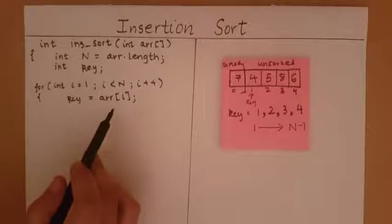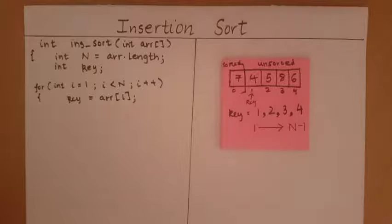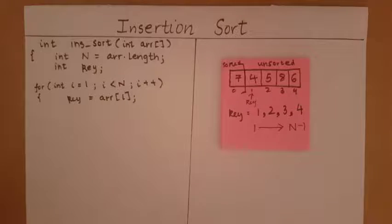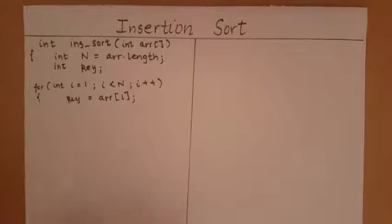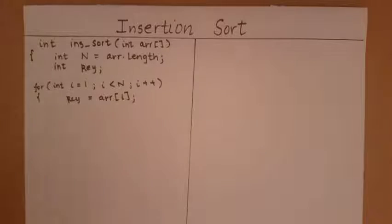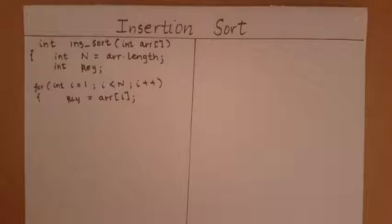Each time, key is considered array[i]. As seen in the previous video, key is going to be that element which I wish to insert into the sorted array. We do this by shifting all those elements which are part of the sorted array and are greater than our key to an index to the right by one index.